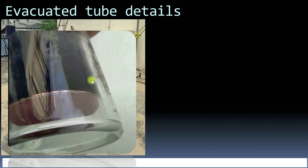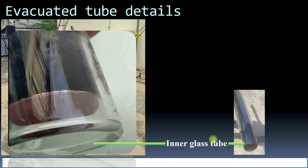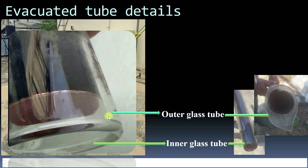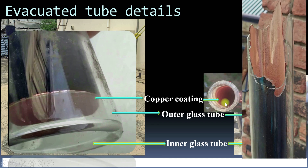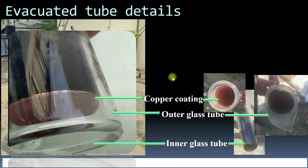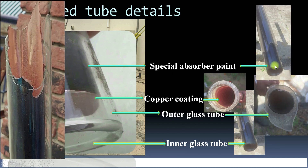An evacuated tube collector consists of two glass tubes — an inner glass tube and an outer glass tube. The inner side of the inner glass tube is coated with copper to transfer heat to water. The outer side of the inner glass tube is coated with a special absorber paint so that it can absorb maximum solar radiation and emit very little radiation. Between these two glass tubes, a vacuum is present — that is why it is known as an evacuated tube collector.